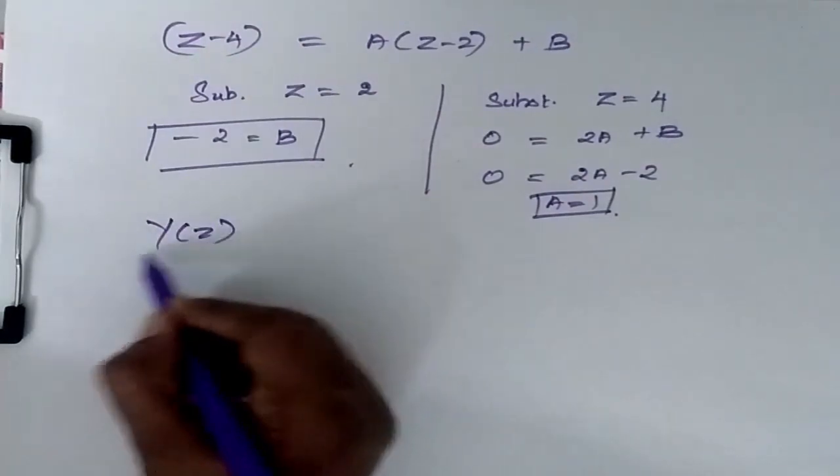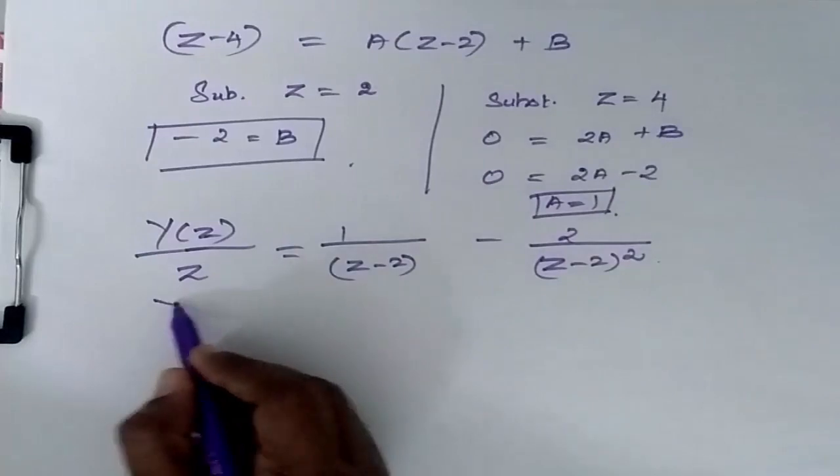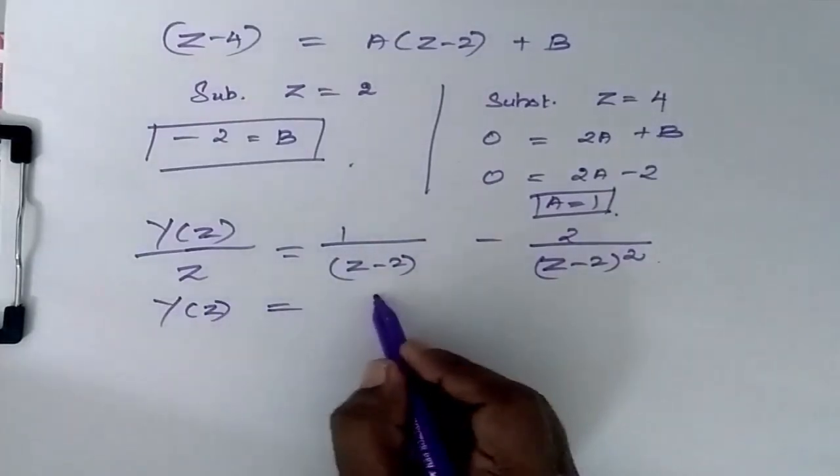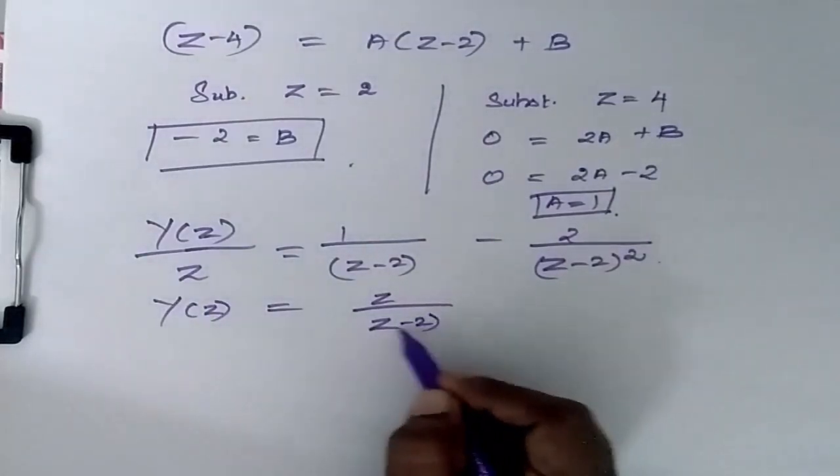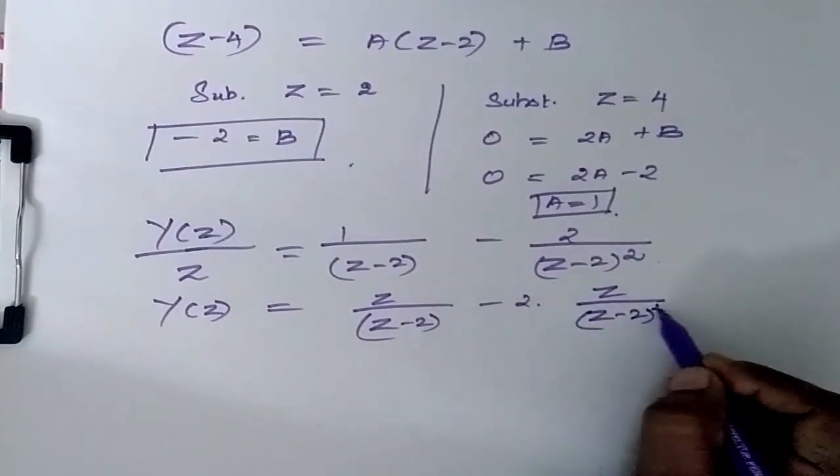Now Y of Z by Z is equal to A. Now Y of Z is equal to Z by Z minus 2, minus 2 into Z by Z minus 2 the whole square.